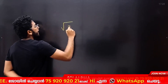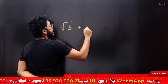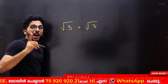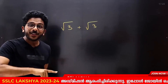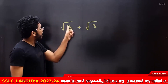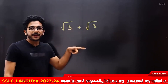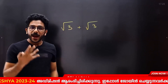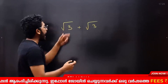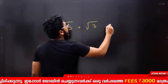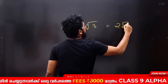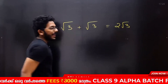Now, root 3 plus root 3. Think of it like apples and oranges — apple plus apple. One apple plus one apple gives you two apples. Apple plus apple is two apples.